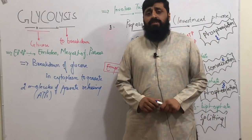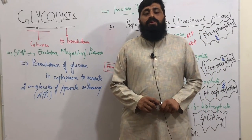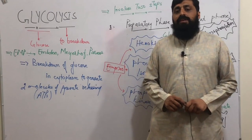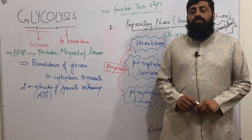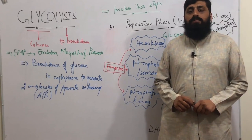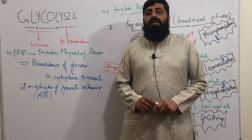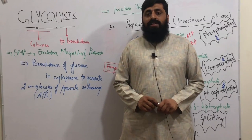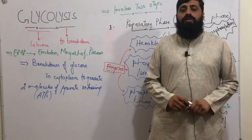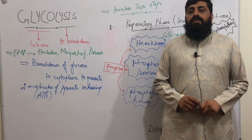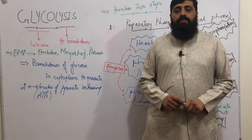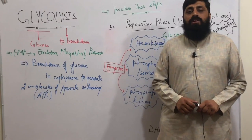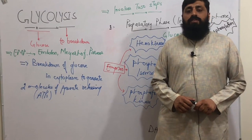Glycolysis — by the word itself — it means the breakdown of glucose. 'Lysis' is the word in glycolysis; it means to break down that particular molecule we are talking about. Here we will talk about glucose, which is basically a six-carbon compound. We will break it down in the cytoplasm for the purpose of generating ATP. ATP is also the energy currency of the cell.